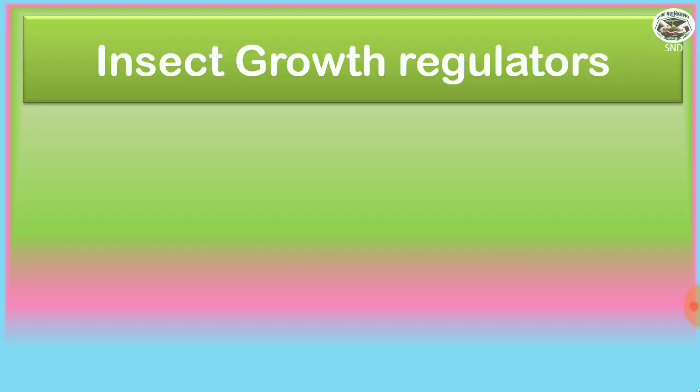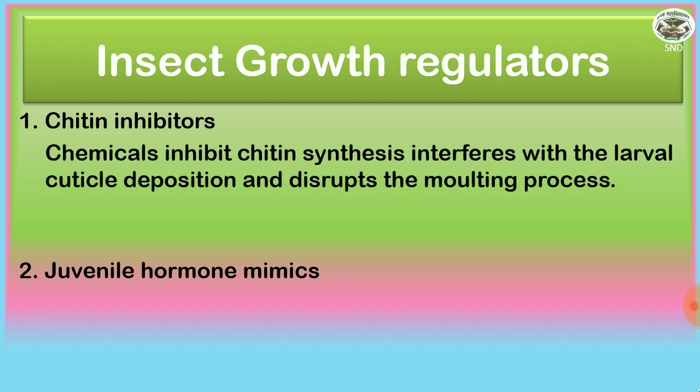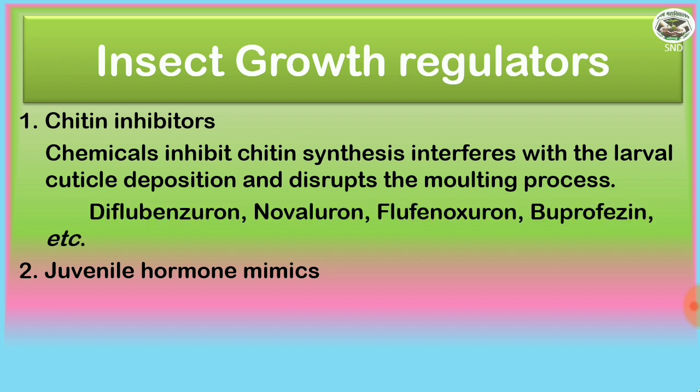The insect growth regulators. First, they are chitin inhibitors, and second, juvenile hormone mimics. The chitin inhibitors are the chemicals that inhibit chitin synthesis and interfere with the larval critical deposition and disrupt the molting process. Examples are diflubenzuron, novaluron, flufenoxuron, buprofezin, etc.